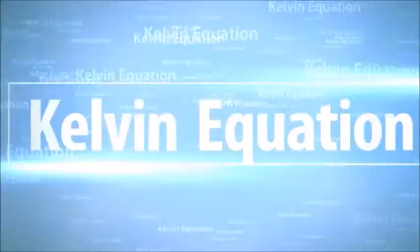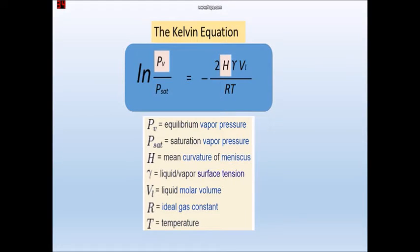This phenomenon can be modeled using Kelvin equation. All the terms are kept constant except for equilibrium vapor pressure, PV, and mean curvature of meniscus H.